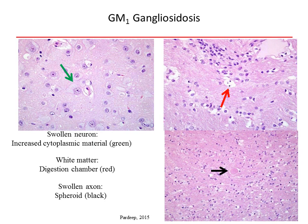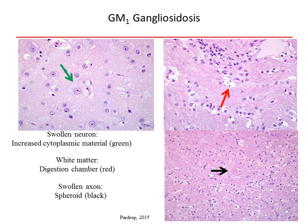GM1 gangliosidosis is a lysosomal storage disease characterized by the reduction or loss of beta-galactosidase enzyme activity. This enzyme hydrolyzes the glycosidic bond and breaks down beta-galactosides into monosaccharides. Loss of this enzyme activity results in the accumulation of GM1 gangliosides in tissues. In people, the disease is categorized into three types: Type 1, the infantile form, is the most severe and usually observed in children less than 6 months of age; Type 2, the late infantile or juvenile form, affects children between 18 months and 5 years of age; and Type 3, the adult form, usually presents in adolescents in their teenage years.